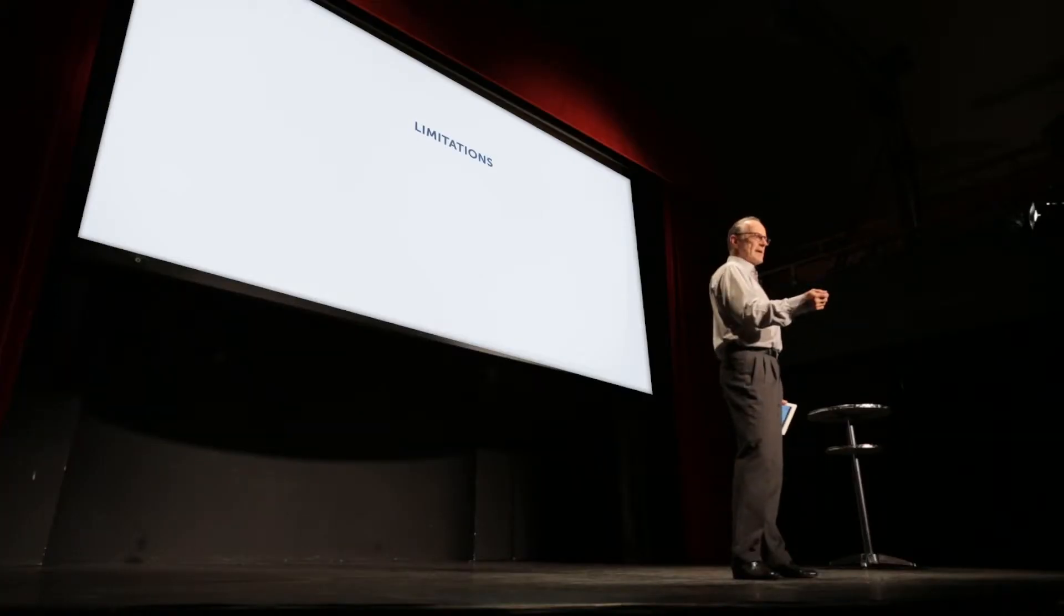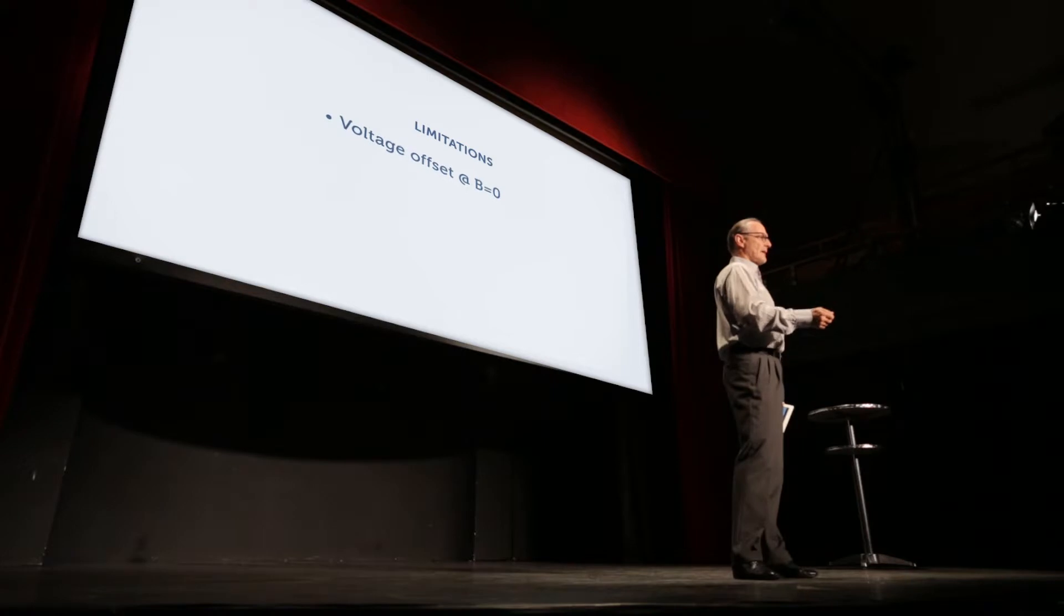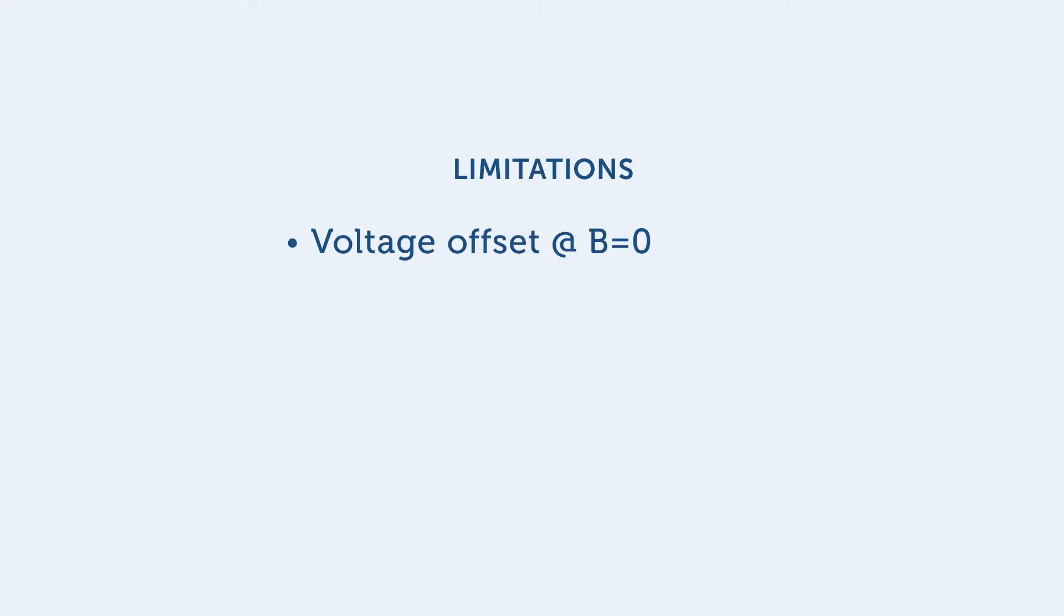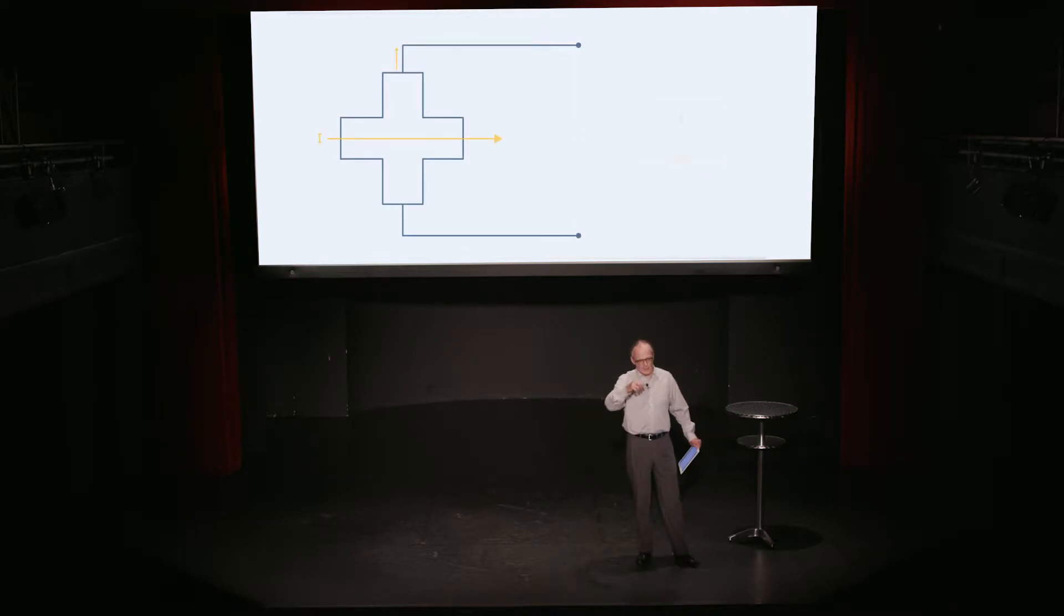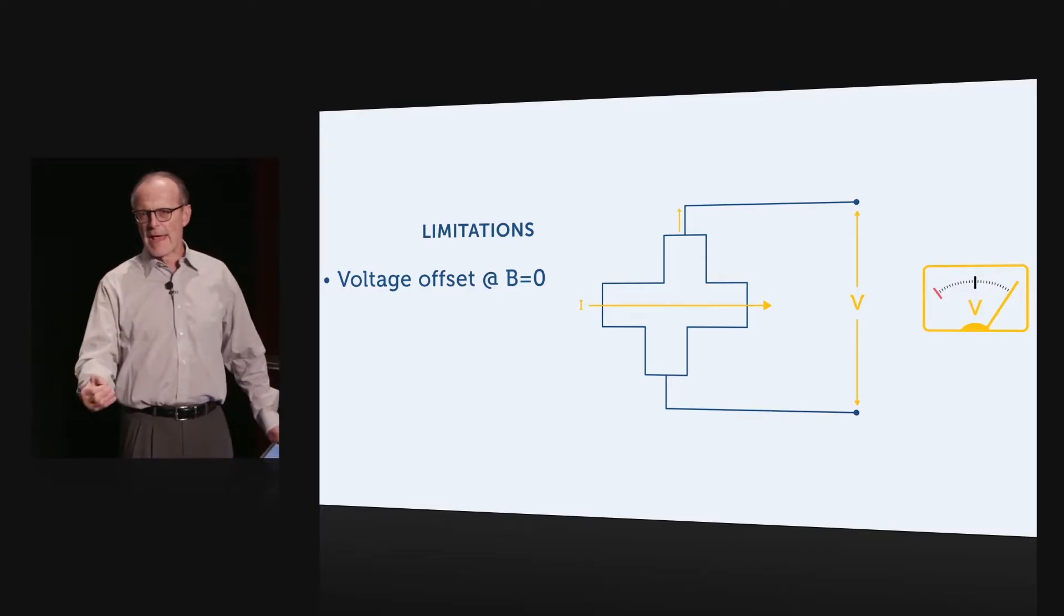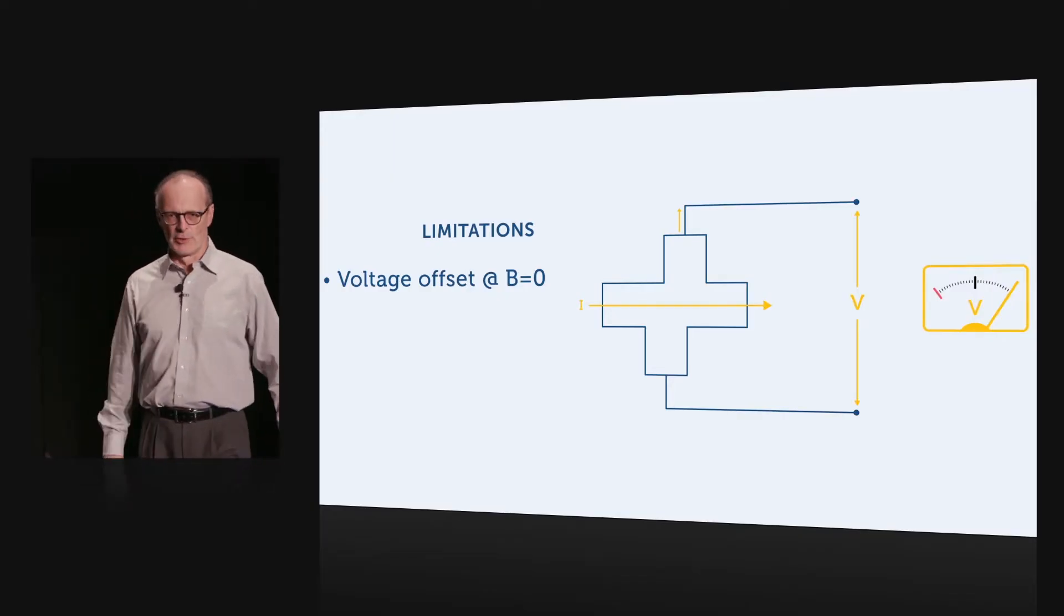However, the Hall technique also has some important disadvantages or limitations. First of all, it suffers from zero field offset. This means that you measure a voltage even if there is no field present. For example, in the traditional Hall element, if we offset the voltage terminals, one relative to the other, you will have an offset voltage.